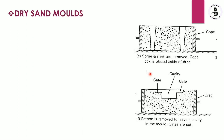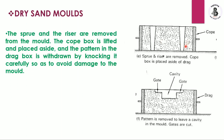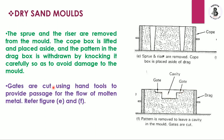The sprue and riser pins are then removed from the mold. The cope box is lifted and placed aside, and the pattern in the drag box is withdrawn. By withdrawing the pattern, the required cavity shape is formed, with gating systems on both sides — one connected to the sprue for inflow of molten metal and the other connected to the riser. Gates are cut using hand tools to provide passage for the flow of molten metal.